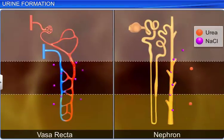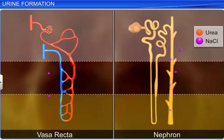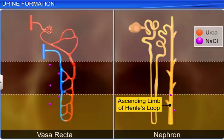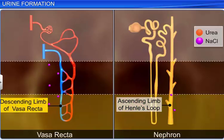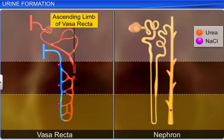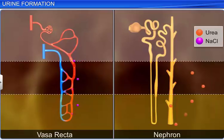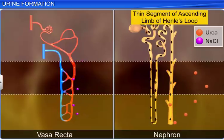This difference in osmolarity is caused by the difference in the concentration of urea and sodium chloride. The sodium chloride transported through the ascending limb of Henle's loop is exchanged with the descending limb of the vasa recta. Then, the ascending limb of the vasa recta returns the sodium chloride to the interstitium. Similarly, small amounts of urea entering the thin segment of the ascending limb of Henle's loop are transported back to the interstitium by the collecting tubule.